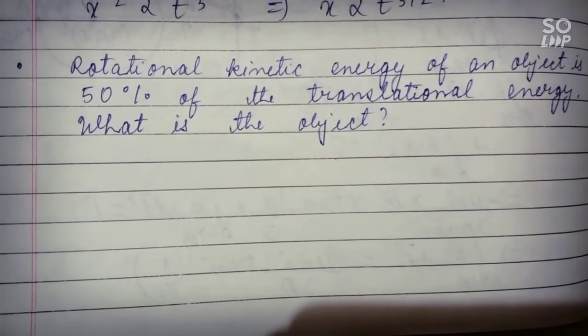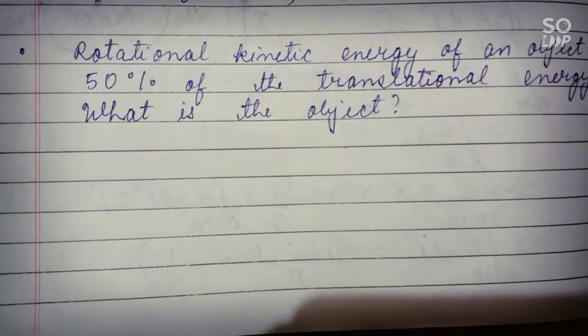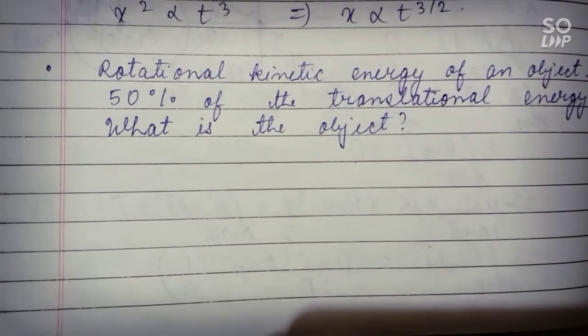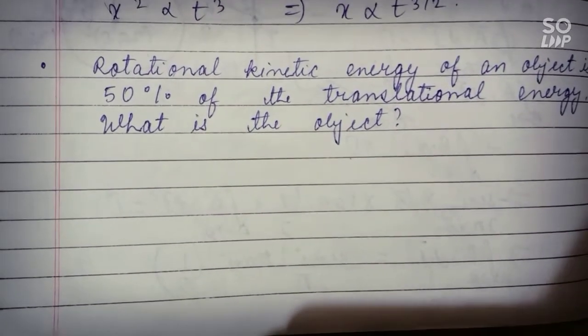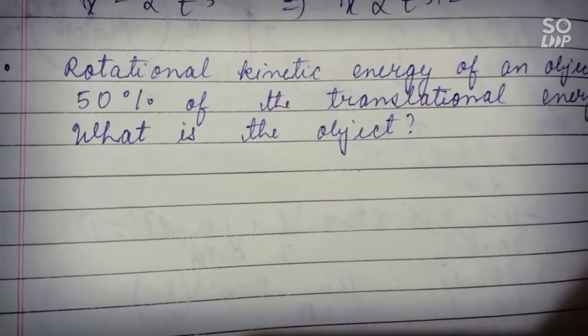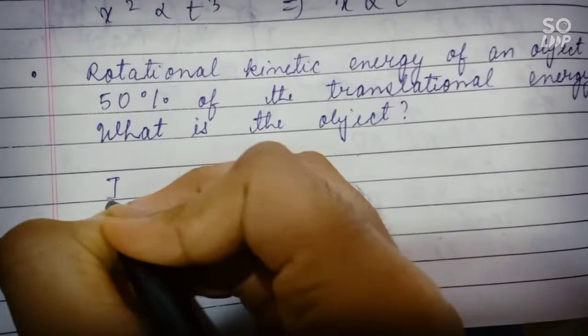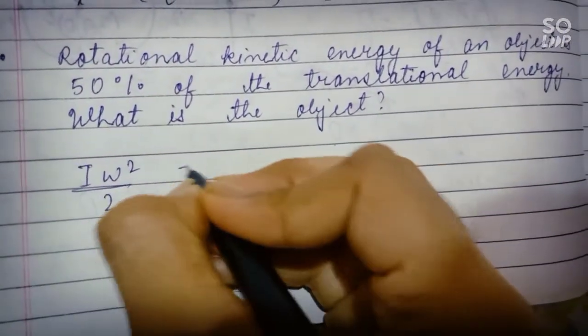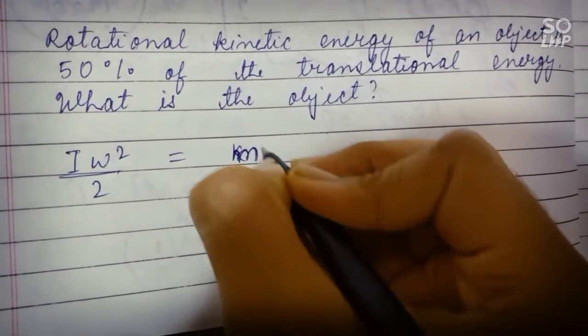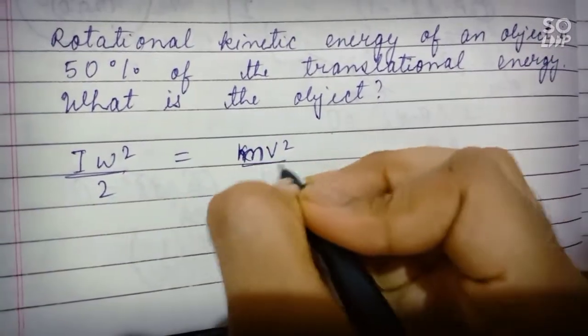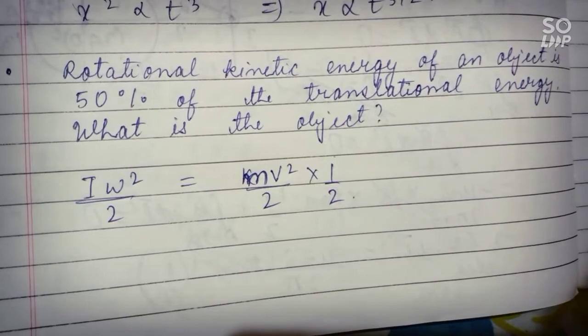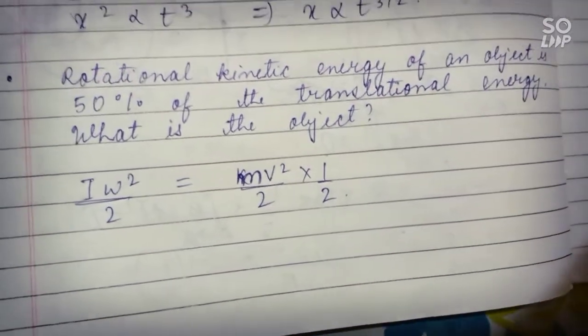Now we know that rotational kinetic energy is equal to half I omega square and translational energy is half mv square. So as per the question we can write that I omega square by 2 equals to half, half mv square by 2 into 1 by 2. This 1 by 2 is because of the 50% given in the question.